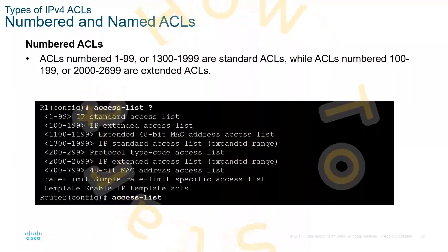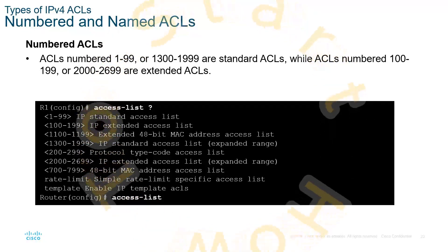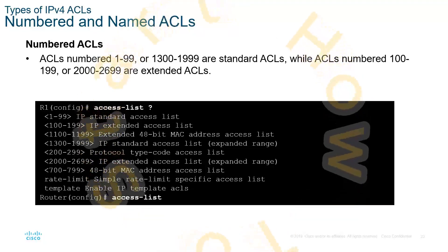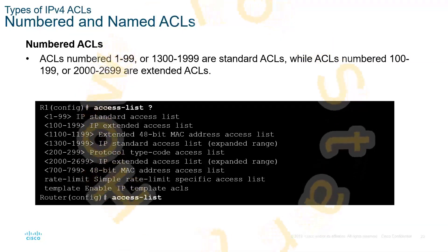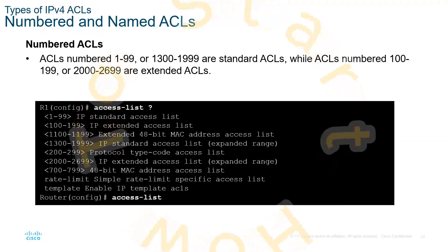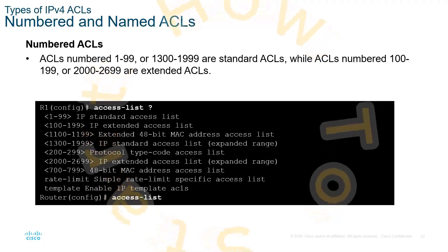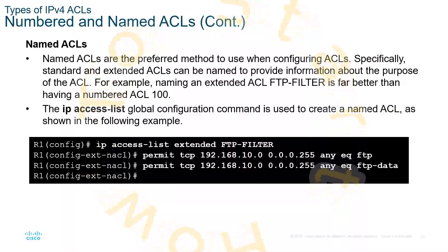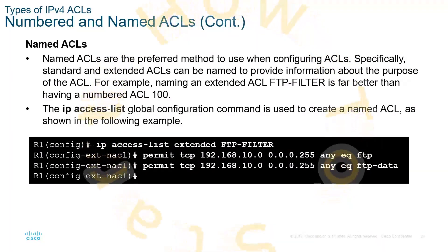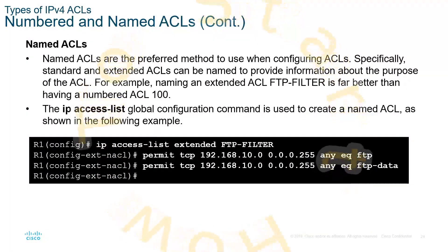We have numbered ACLs. Instead of giving an ACL a name, we can use a number. Numbers 1 through 99 are standard, and 1300 to 1999 are also standard. For extended ACLs, the range is 100 to 199, or 2000 to 2699. We also have named ACLs — just like numbered ACLs, we would do either standard or extended. Here we have an example of an extended ACL that is being named FTP filter.